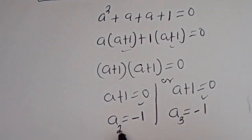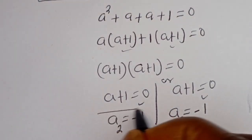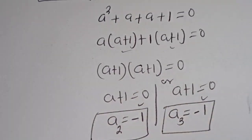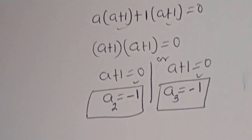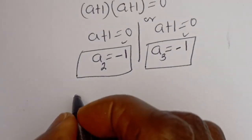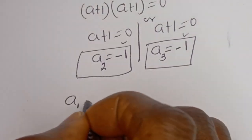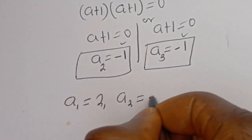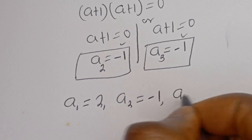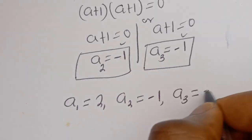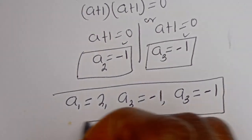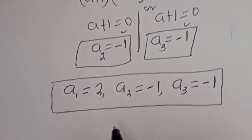You can see that A2 and A3 are both equal to minus 1. Therefore, our final answers are: A1 is equal to 2, A2 is equal to minus 1, and A3 is equal to minus 1. We can check to confirm if these answers are right.